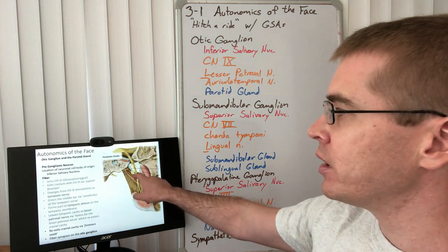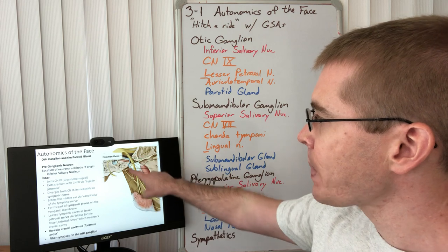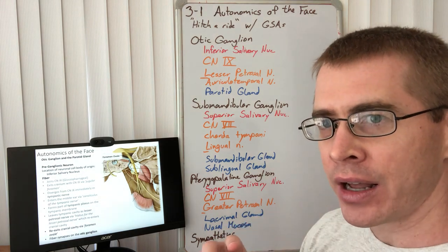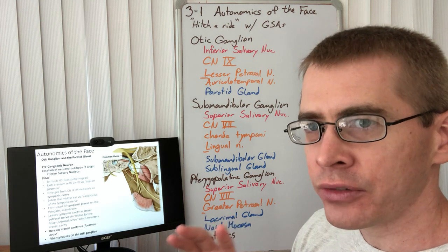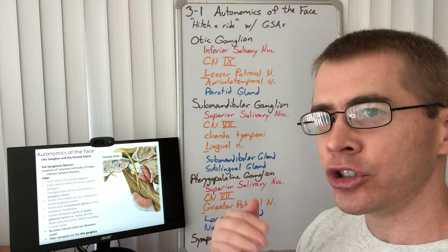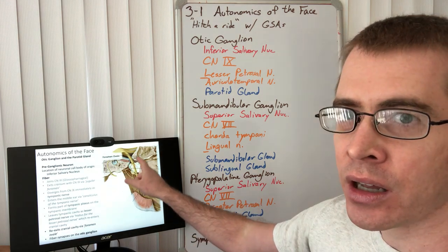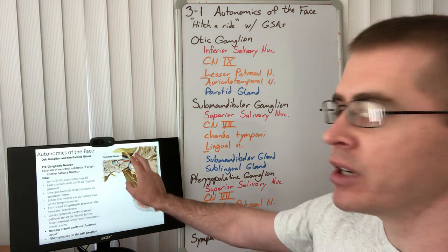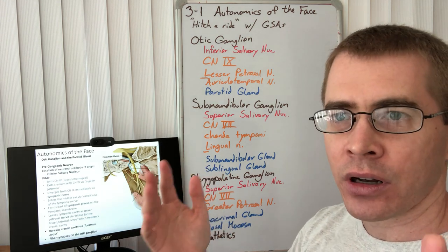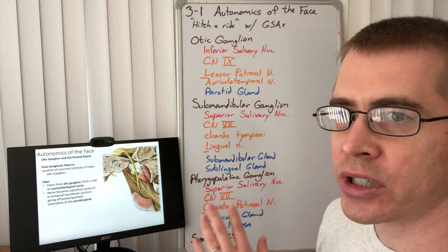These GVE fibers hitch a ride on the V3 fibers and end up synapsing in the otic ganglion. This hitching a ride concept is important — GVE fibers in the cranium love GSA fibers and travel everywhere with them. Wherever the GVEs can join up with a component of the trigeminal nerve or another GSA fiber, they will do so. The preganglionic path runs from the inferior salivary nucleus all the way to the synapse at the otic ganglion.